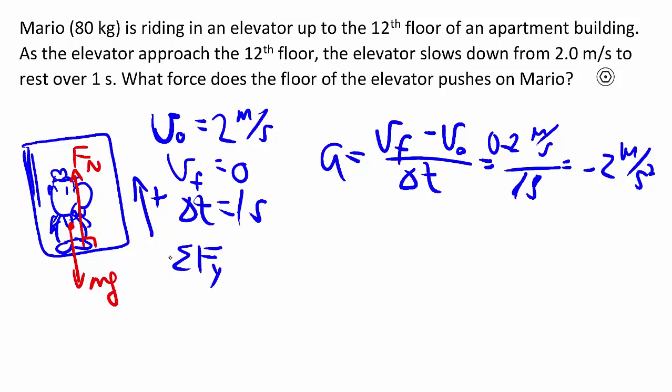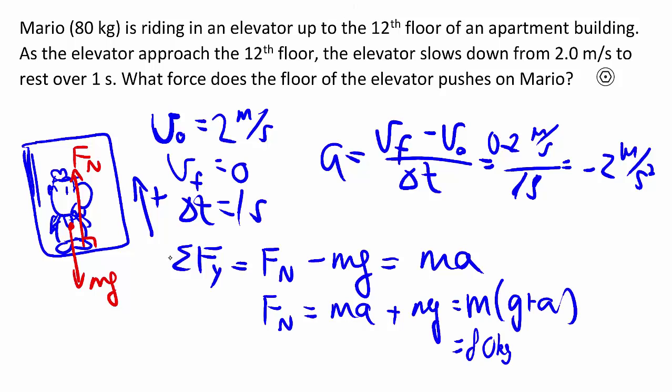So here we can do sum of the forces in the vertical direction, we have positive Fn minus Mg is equal to ma, a being my negative 2 m/s squared. So Fn here is ma plus mg, and we can factor out the m. Now, once we sub in the numbers, remembering that a here is negative because it's downwards.